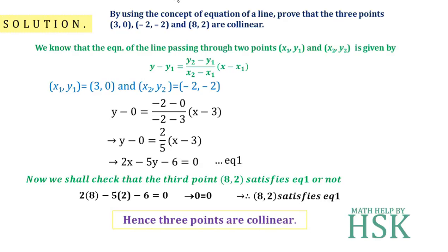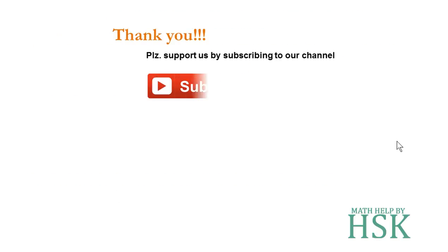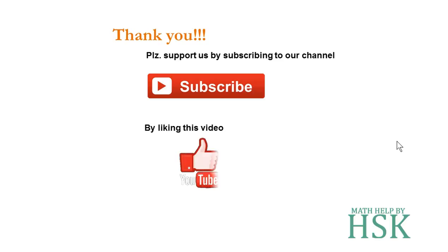Therefore, the three points are collinear. This is how, by using the concept of equation of a line, we prove that three points are collinear. Thank you — please support us by subscribing to our channel, liking this video, and leaving your comments.